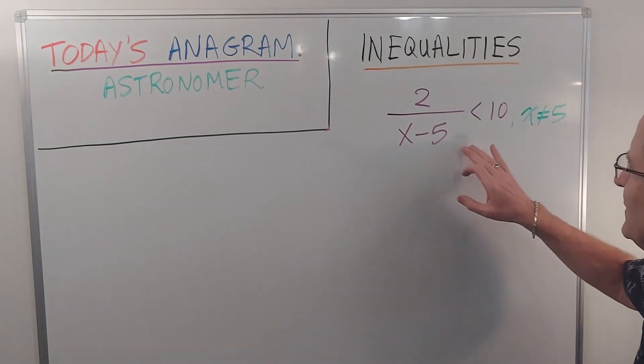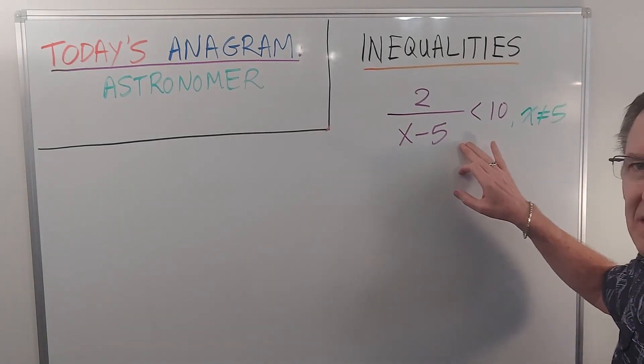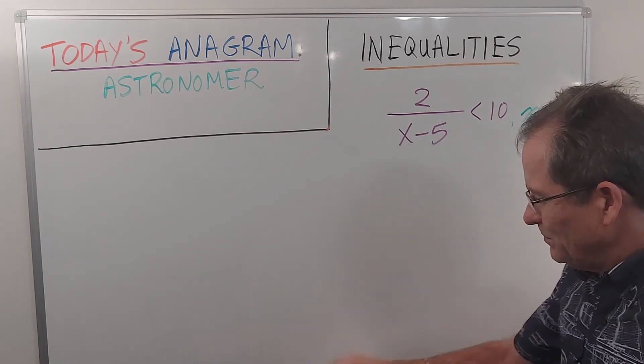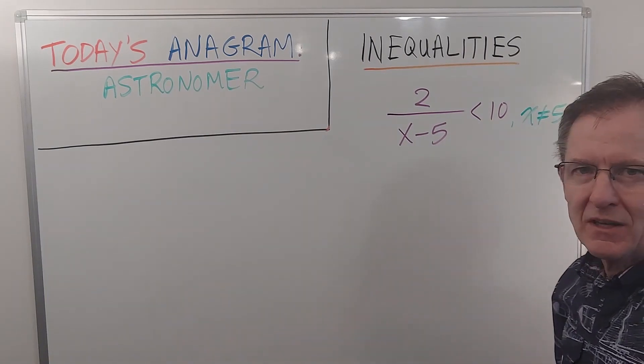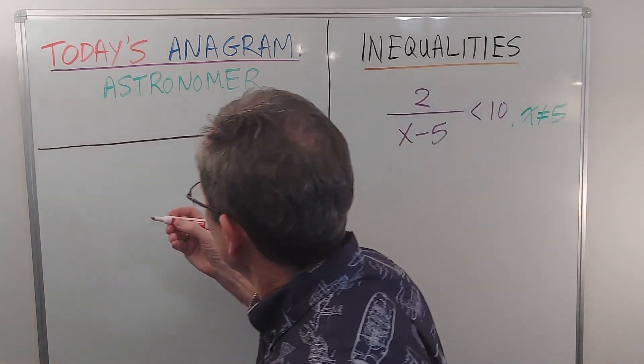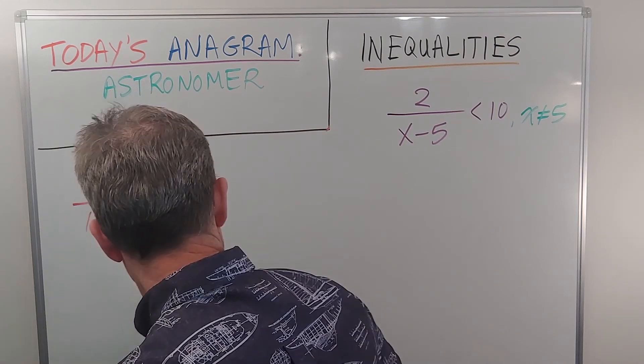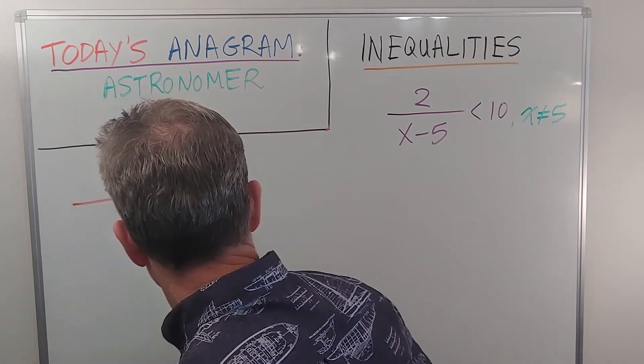Okay, how in the world do we solve this inequality graphically? Well, we have to apply a bit of a trick, you might say. Let's bring the 10 to the left-hand side so it's less than zero.